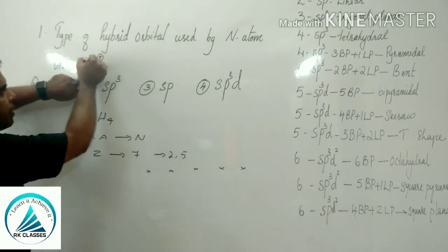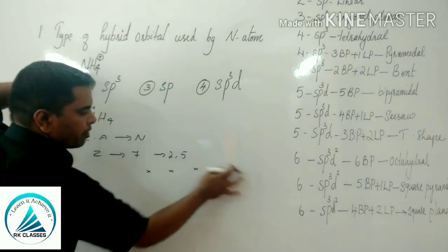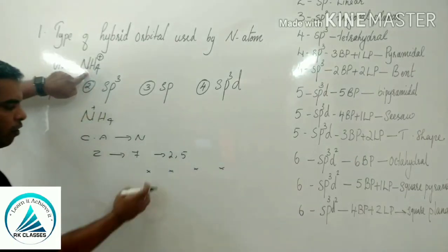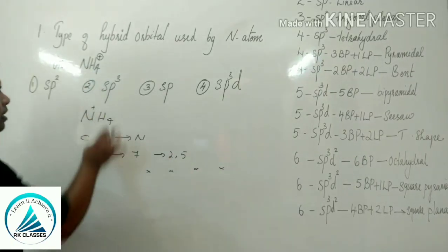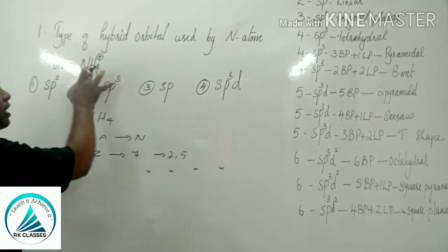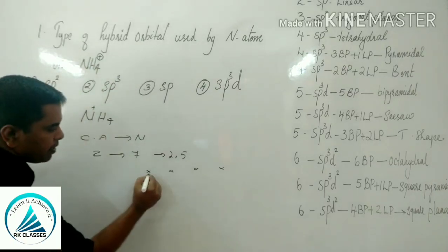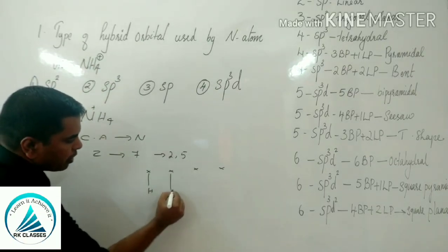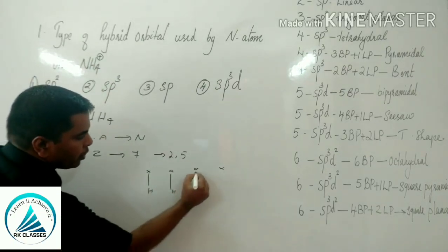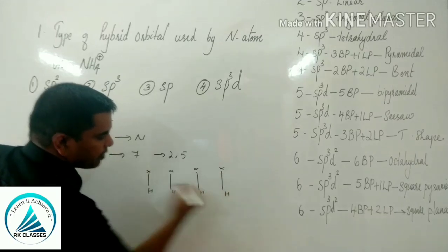Since there is a positive charge, nitrogen loses 1 electron, leaving only 4 electrons. All 4 electrons are utilized to make bonds with hydrogen.